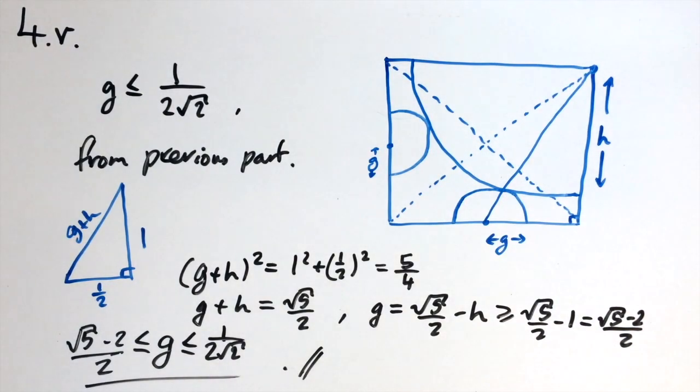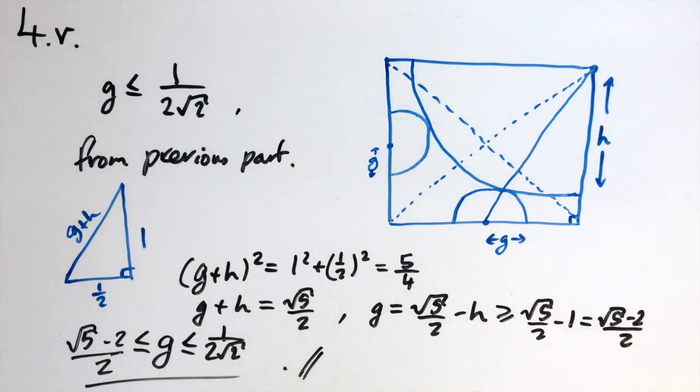So that's how you answer the whole of question 4 from the 2017 MAT exam — lots of triangles and circles in this question, so make sure you're up to date with your Pythagorean theorem and your trigonometry.